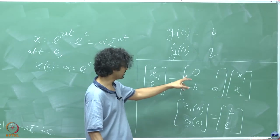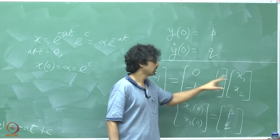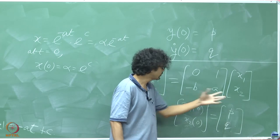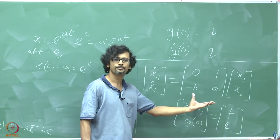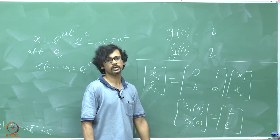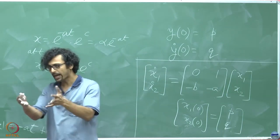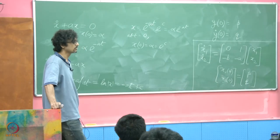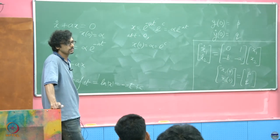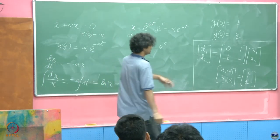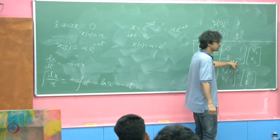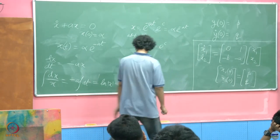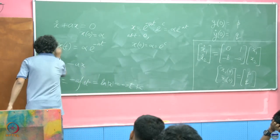If we had a diagonal matrix, things would be a lot easier. So the question arises: this coupled form is just one possible form. In general for a second order system, you will see this kind of coupled structure.